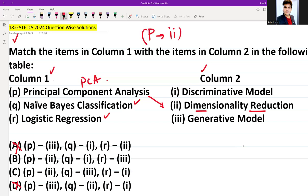Thereafter, Naive Bayes classification algorithm falls under generative model because in Naive Bayes classification there is a concept of learning with the help of joint probability P(X,Y), where X is a feature and Y is a target variable. So it is a generative model. Q belongs to iii.